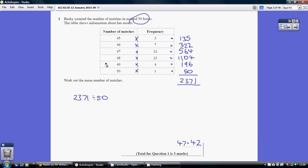Now how many matches do we have in total? Well on 3 occasions we had 45 matches. So 3 times 45 gives us 135 matches. On 7 occasions we had 46 matches. So multiplying that together that alone gives us 322 matches and so on.